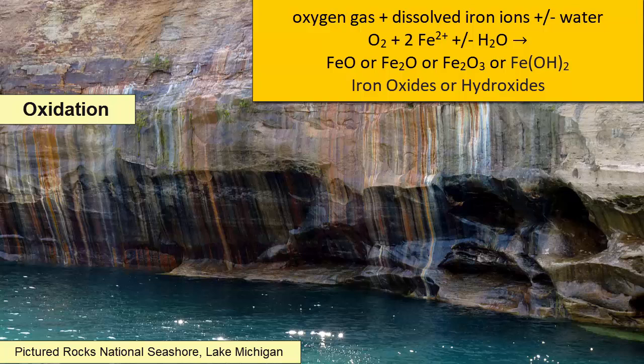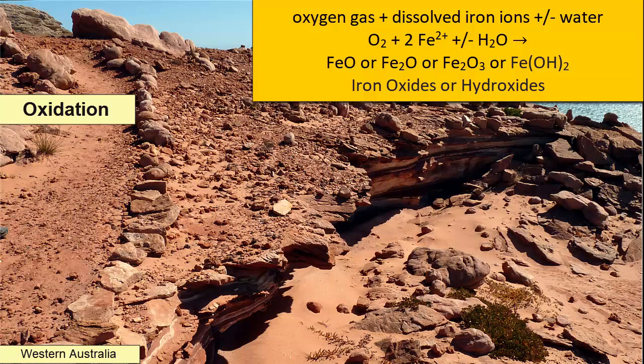Manganese oxides are black. Copper oxides are bright blue. Iron oxides are the most common oxides found on the surfaces of rocks, and usually when you see a red-colored rock from a distance, you're looking at the oxide stains on its surface.